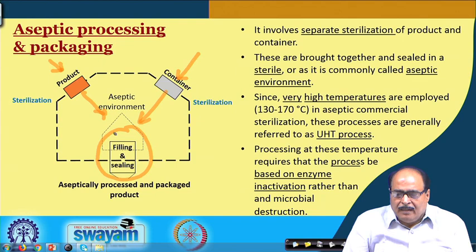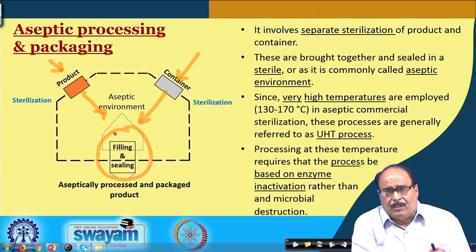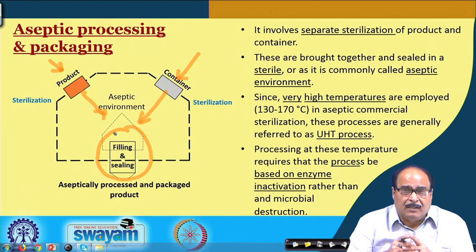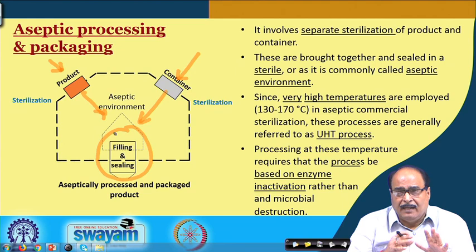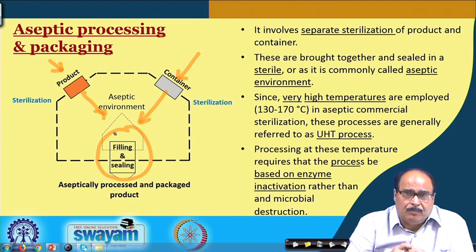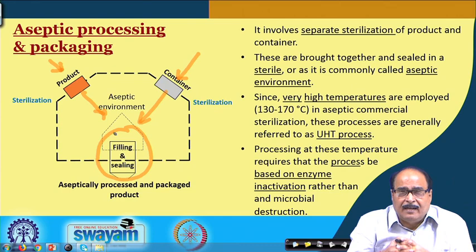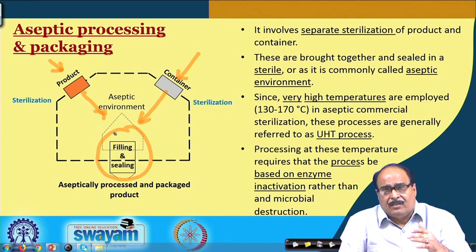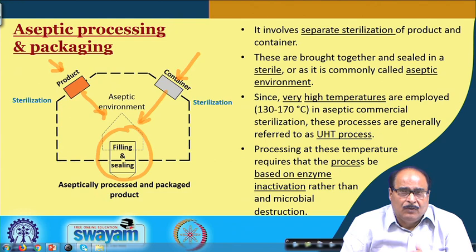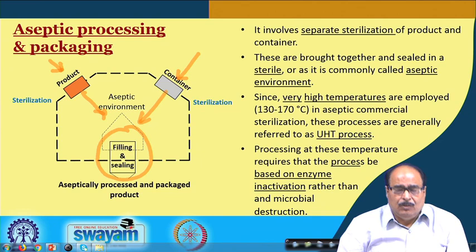Generally, higher temperatures — to the tune of 130 to 170 degree Celsius — are common in aseptic commercial sterilization, and these processes are referred to as UHT (ultra high temperature) processes. At these high temperatures, when examining microbial and enzyme inactivation kinetics, enzymes show greater resistance than microorganisms. Therefore, enzyme inactivation is generally taken as the basis for the optimization of UHT processes.